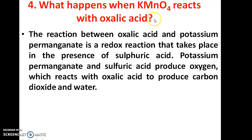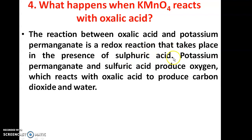Next question: what happens when potassium permanganate reacts with oxalic acid? The reaction between oxalic acid and potassium permanganate is a redox reaction — meaning both oxidation and reduction take place. Oxidation is loss of electrons and reduction is gain of electrons.